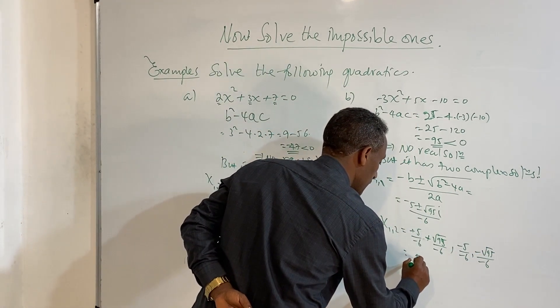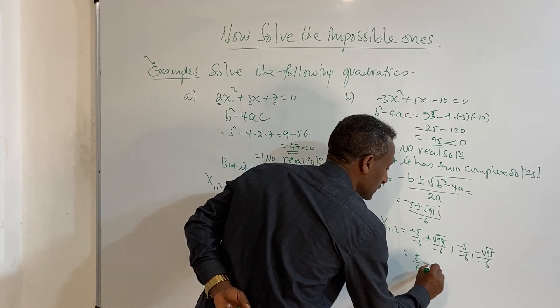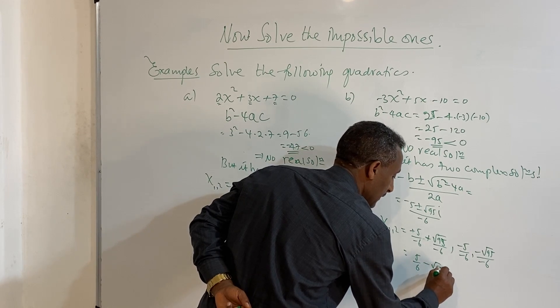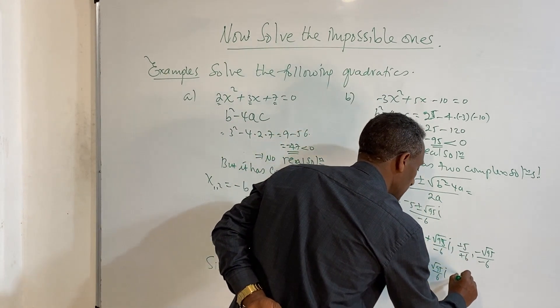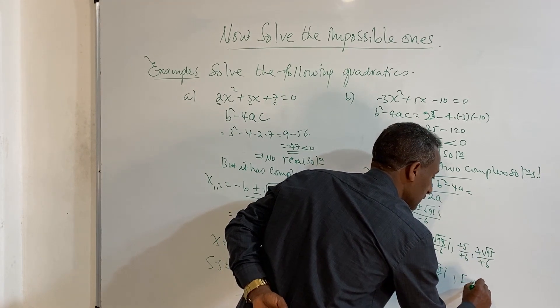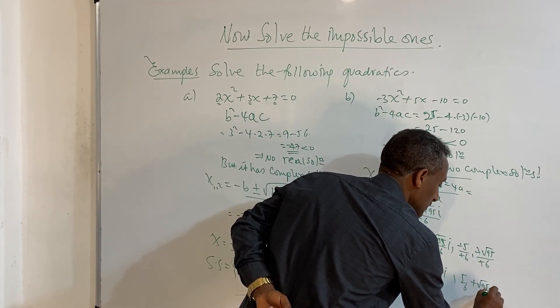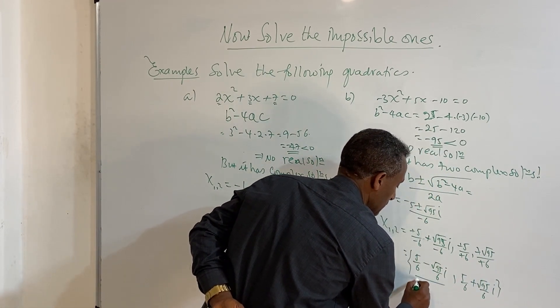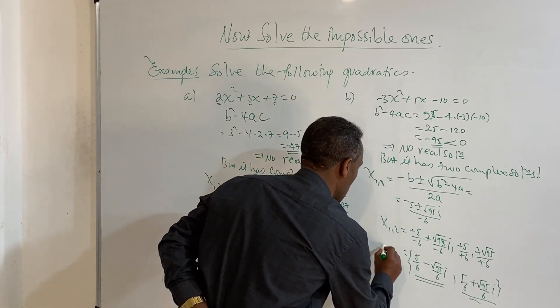Which is 5 over 6 plus or minus root 95 over 6 i. This will be our solution.